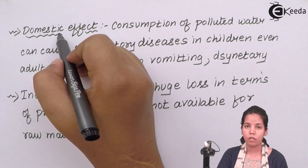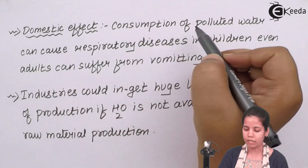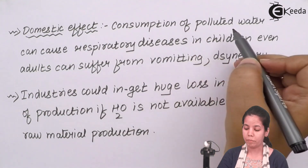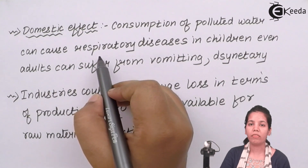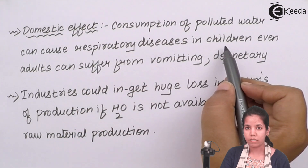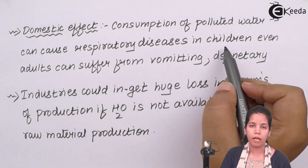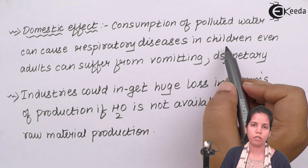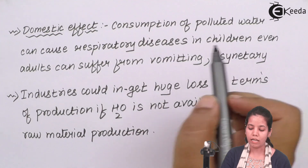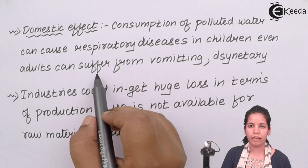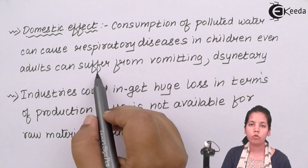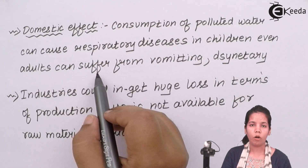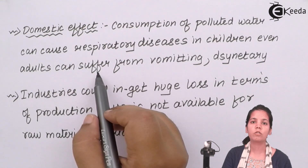Domestic effects: consumption of polluted water can cause respiratory diseases, and these can even cause diseases of bronchi, alveoli, colon cancer, and cholera, whereas in others they can cause dysentery, vomiting, and all such symptoms. So polluted water bodies can not only harm nature but human beings as well.